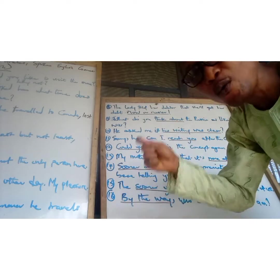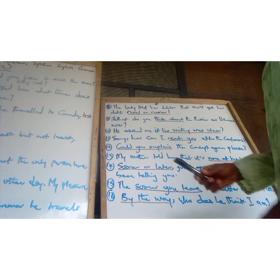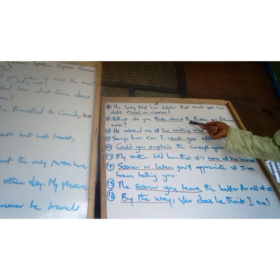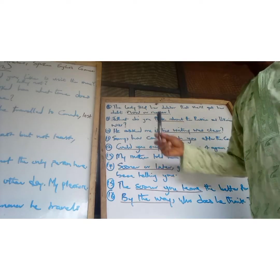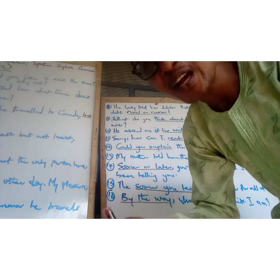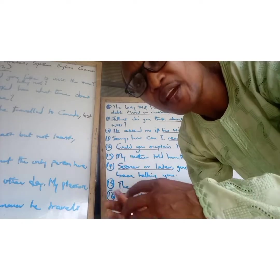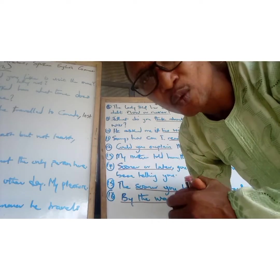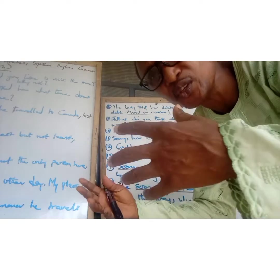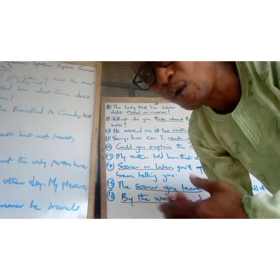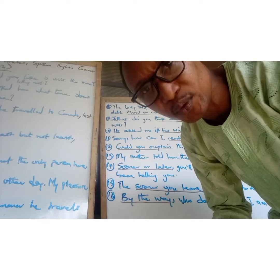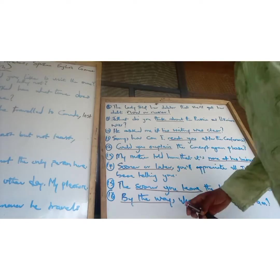The next one is 'what do you think about.' For example: 'What do you think about the current Ukraine and Russia war?' Or: 'What do you think about the global inflation that is going on around the world?'